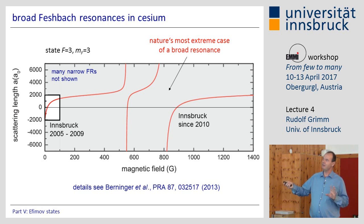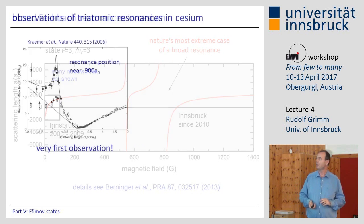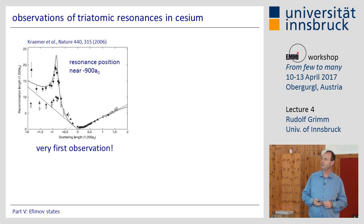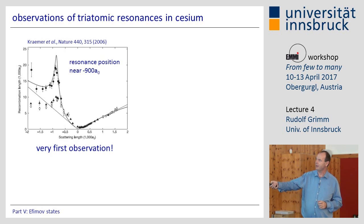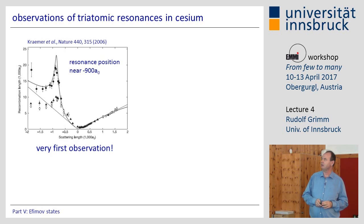Later, we upgraded our magnets and could produce fields close to 1 kG, exploiting a much broader resonance — the world record holder in breadth among entrance-channel-dominated resonances. This is the resonance we used in subsequent experiments. Here are the first main results: the first observation of the Efimov resonance in the low-field region, showing a resonantly enhanced loss feature on the negative side at around minus 900 Bohr radii.